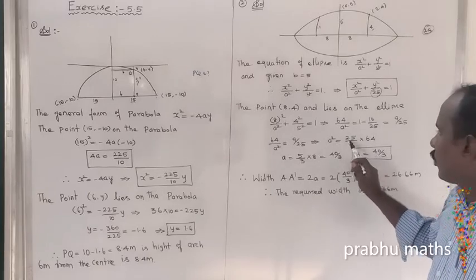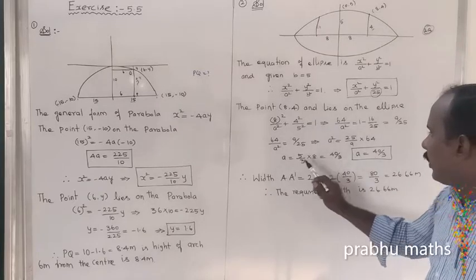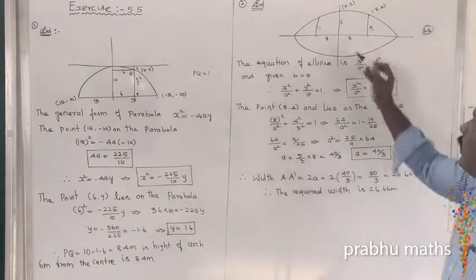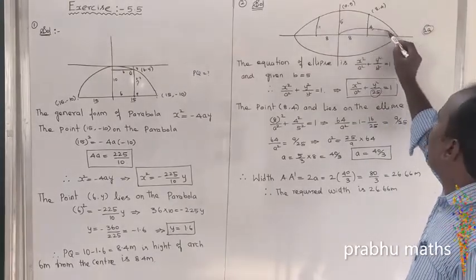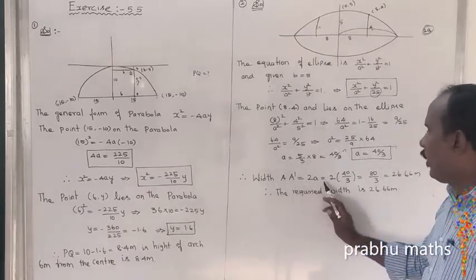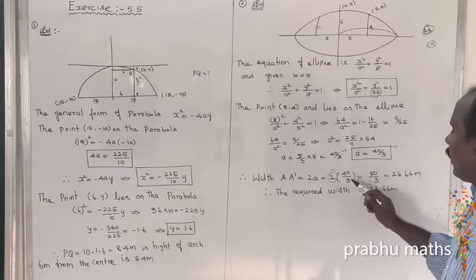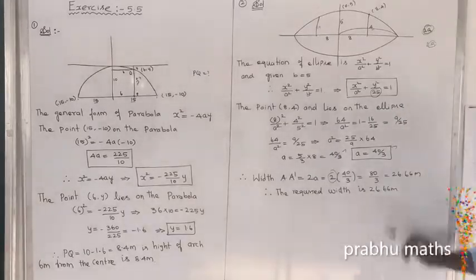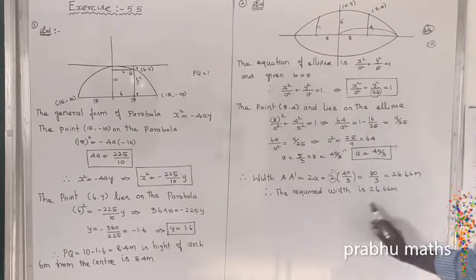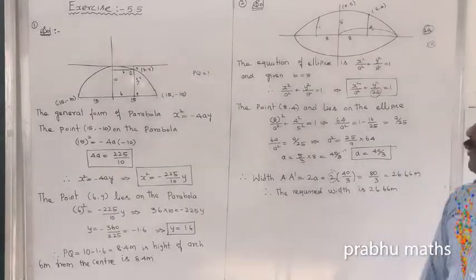So a squared equals 25 divided by 9, into 64, which equals 1600 divided by 9. Therefore a equals 40 divided by 3. The width 2a equals 2 into 40 divided by 3, which equals 80 divided by 3, equal to 26.66 meters. The required width is 26.66 meters. That completes Exercise 5.5, first and second sum.